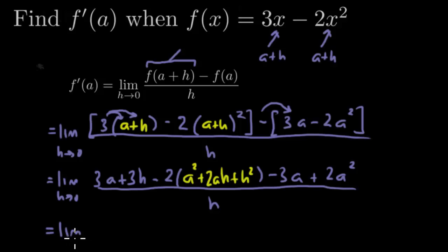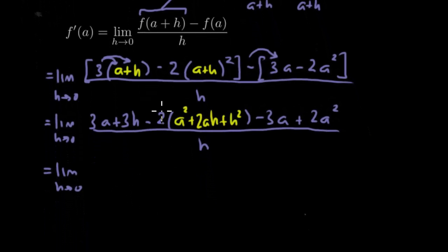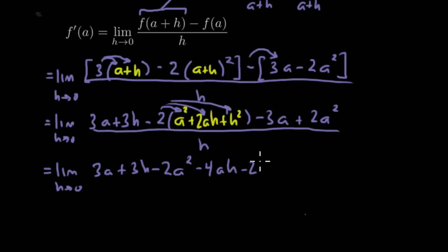So that's going to be the limit as h goes to 0. Okay, so let's distribute this 2 now. We're going to get 3a plus 3h minus 2a squared minus 4ah minus 2h squared minus 3a plus 2a squared all over h.